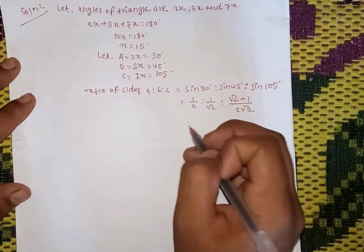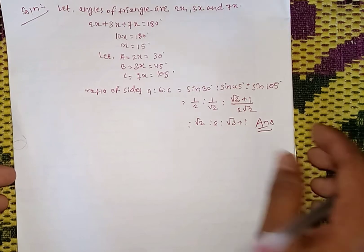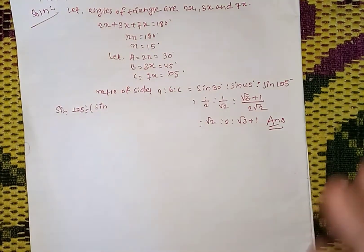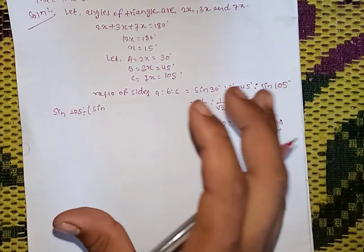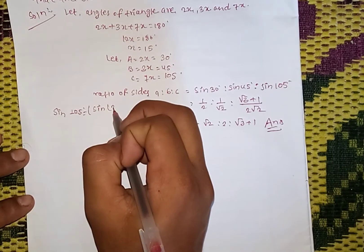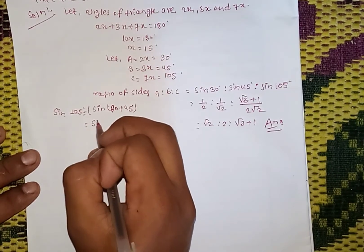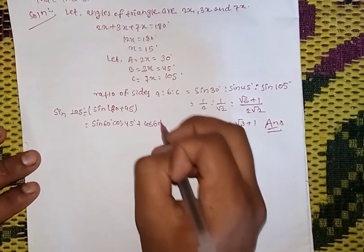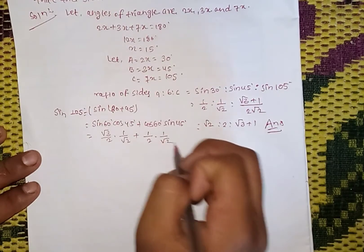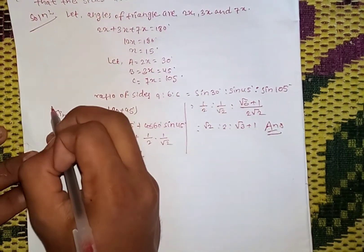The ratio simplifies to: root 2 is to root 3 plus 1. For sin 105 using sin(60 plus 45): sin 60 cos 45 plus cos 60 sin 45. Sin 60 is root 3 by 2, cos 45 is 1 by root 2, cos 60 is 1 by 2, sin 45 is 1 by root 2. So sin 105 equals root 3 plus 1 divided by 2 root 2.